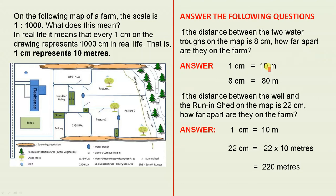Okay. So there's one water trough and there's the other because that tells us that this symbol here is a water trough. So if from there to there is 8 cm on the map, we have 1 cm equals 10 m, therefore 8 cm equals 80 m. So the water troughs are 80 m apart.